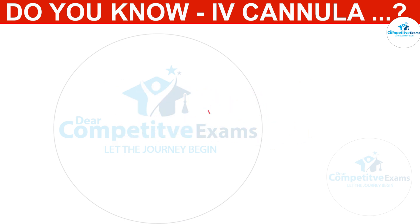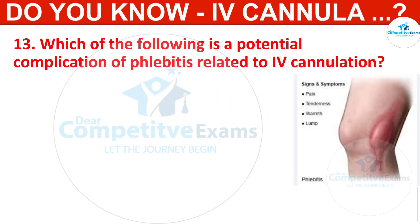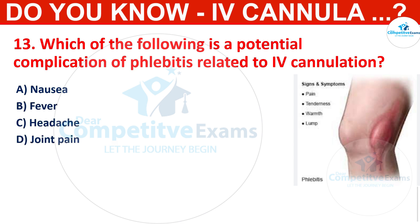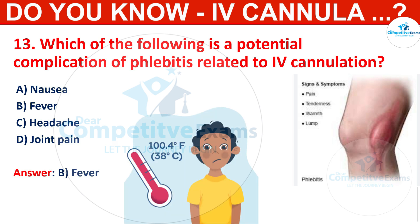Q13. Which of the following is a potential complication of phlebitis related to IV cannulation? Options: nausea, fever, headache, or joint pain. The correct answer is fever. Phlebitis, inflammation of the vein, may manifest with symptoms such as fever.